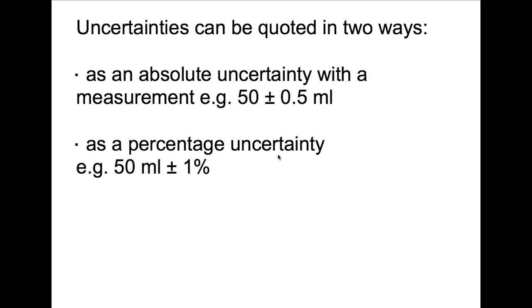Your evaluation is worth six marks in total. Three marks are for evaluating your procedure, and the other three marks are for evaluating your results. If you're able to identify uncertainties within your experiment, calculate those as percentages, combine them, and then apply that combined uncertainty to your final answer, you're able to access three marks of the evaluation straight away. So it can be quite a good way to pick up marks in what is a tricky section of your project.